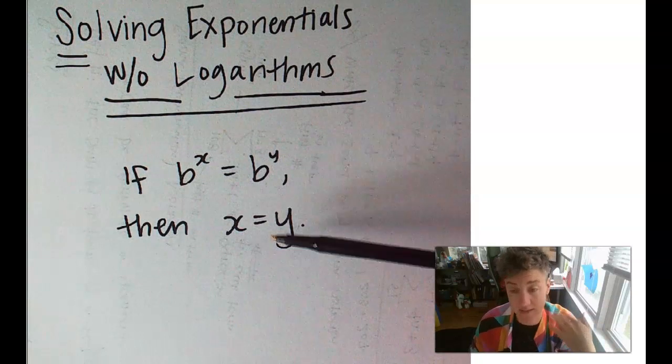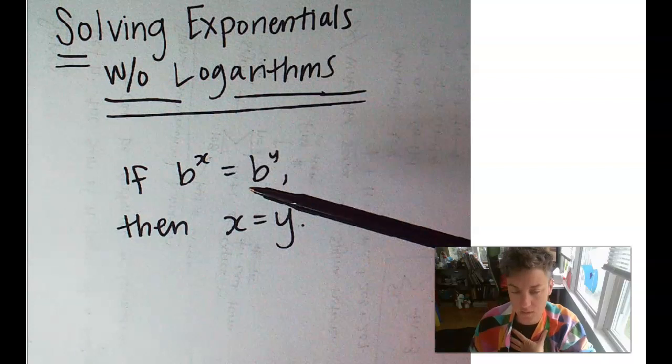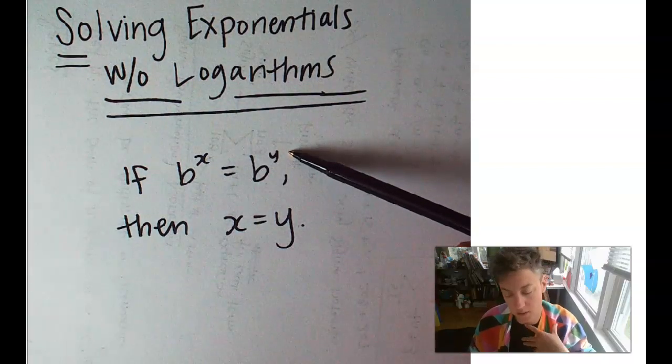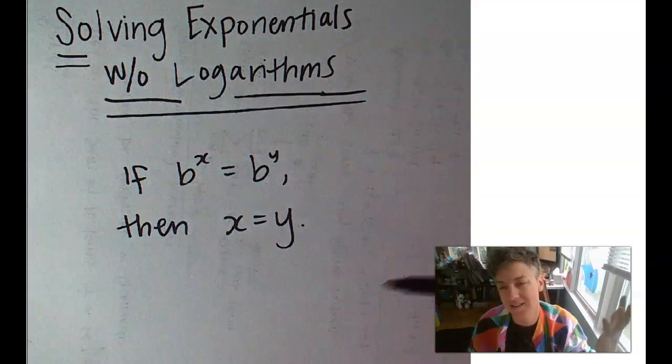Now, will they be exactly the same thing? This might be like 2 to the third equals 2 to the x plus 4. So 3 would equal x plus 4, something like that.